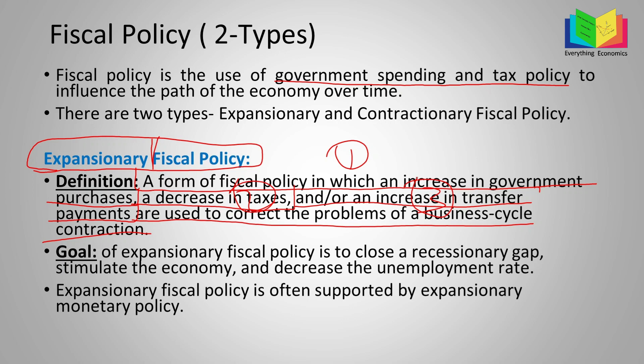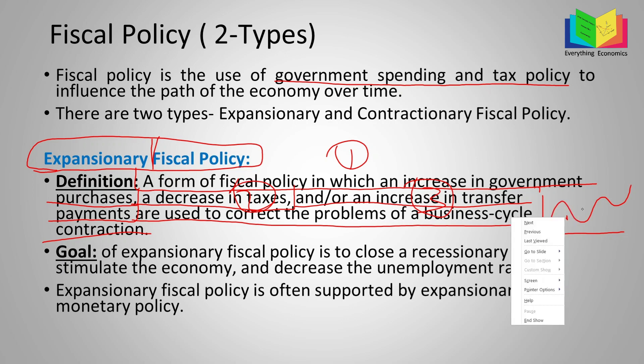Due to these three factors, people will have more money and they will spend more. The government is also spending more when it increases government purchases, and due to the reduction in taxes and increase in transfer payments, people have more money and will spend more in the economy. The government does this to solve the problems of business cycle contraction. When the economy is in the contraction part of the business cycle, the government increases expenditure so people have more money, there is more activity in the economy, and the business cycle can recover and go up.